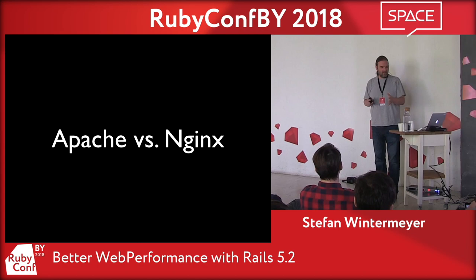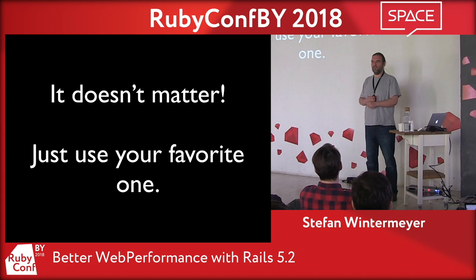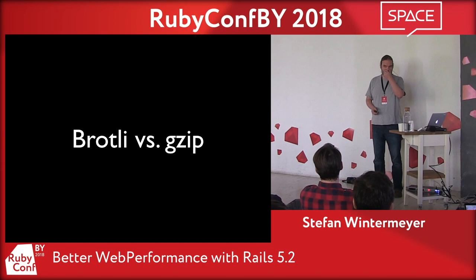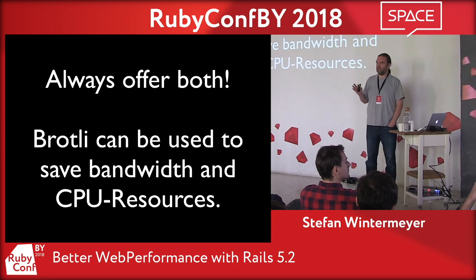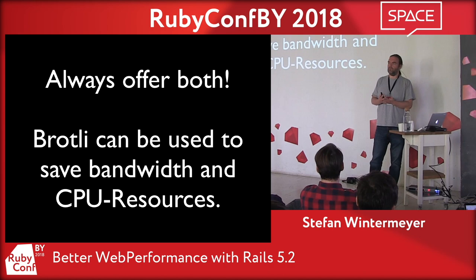The next question is always should I use Puma or Nginx? Both are very fine web servers — use whatever you like. What about Brotli versus Gzip? Brotli is a newer compression tool and you want to use it. It gives you 5% to 8% additional compression of all files, and it uses less CPU power on the server. So again, a win-win: less bandwidth and less CPU power.